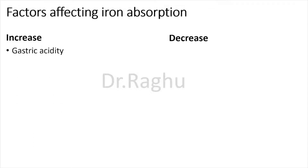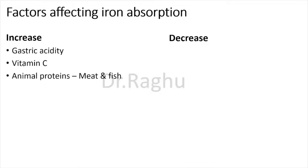First and foremost is gastric acidity — the presence of gastric HCl in the stomach is extremely important for iron to be absorbed. Any condition which decreases gastric HCl is going to hinder iron absorption. The second factor is Vitamin C, which is why iron is usually prescribed together with Vitamin C. Third is animal proteins like meat and fish.